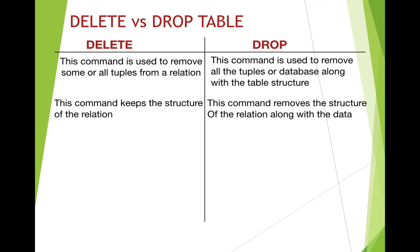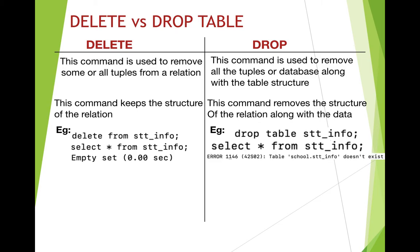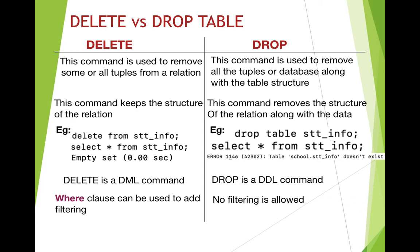DELETE keeps the structure of the relation — after giving DELETE the headings remain, giving an empty set. But DROP removes the structure along with the data, resulting in an error when you try to select. DELETE falls in the category of DML (Data Manipulation Language) commands, while DROP falls under DDL (Data Definition Language) commands. The WHERE clause can be used with DELETE for filtering specific rows, but DROP does not allow any filtering.